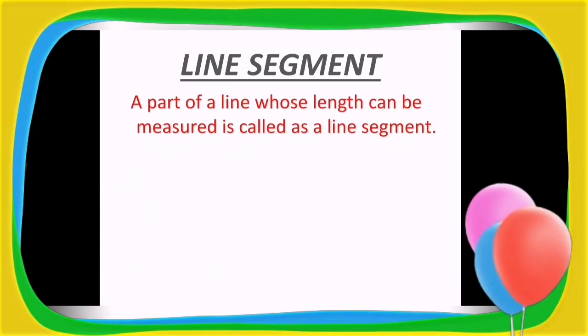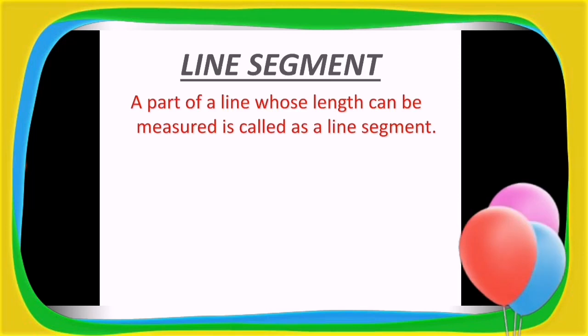So let's have a clear look and try to understand the description or the definition of it. A part of a line whose length can be measured is called as a line segment. Yes, for the line we cannot measure its length, and for the line segment definitely we can measure its length.